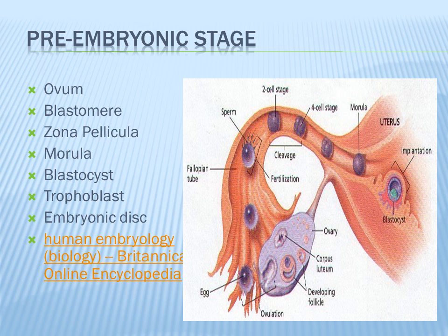The pre-embryonic stage is the time from conception to implantation, lasting about 14 days. This picture shows a female reproductive organ ovulating, how it becomes an egg, travels down the fallopian tube, becomes fertilized, and then cleaves into a two-cell and four-cell stage. It continues to grow into what's called a morula, and then once implanted, it becomes a blastocyst. Just be familiar that these are part of the pre-embryonic stage.